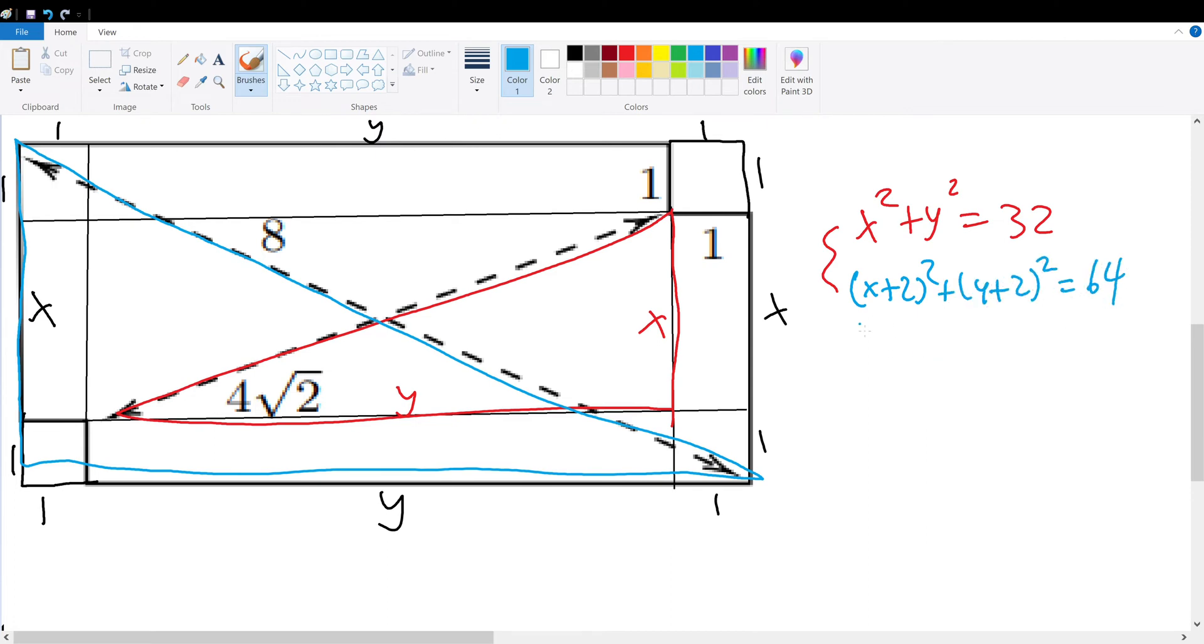Expanding out the second one, we get x² + 4x + y² + 4y + 8 = 64. Now, we can combine this with the red formula of x² + y² = 32 by subtracting this equation from this equation. To do that, we will end up with, I'll switch to black now because it's one equation.